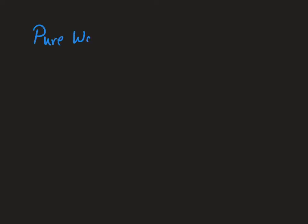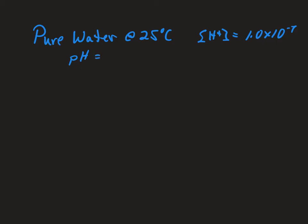Let's consider pure water at 25 degrees Celsius. We know that the concentration of hydrogen ions is 1.0 times 10 to the minus 7, and that the pH is 7.